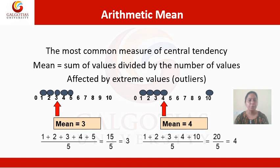Let's see an example. If the values are 1, 2, 3, 4, and 5, the mean will be 3. We calculate it as: 1 + 2 + 3 + 4 + 5 = 15, divided by the sample size of 5, which equals 3. Mean is also referred to as the average of values.